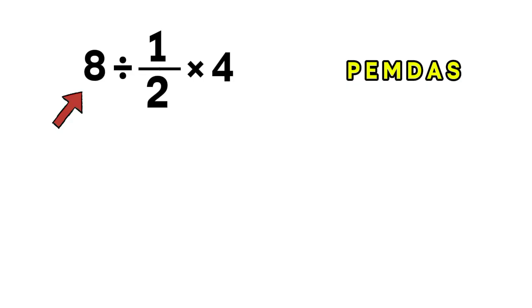That means we handle things in this order: parentheses first, then exponents, followed by multiplication and division from left to right, and finally, addition and subtraction.